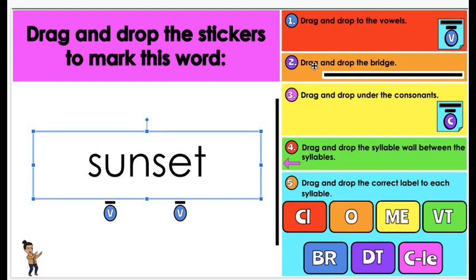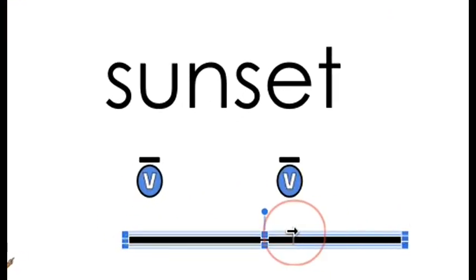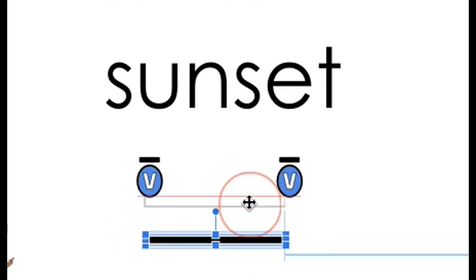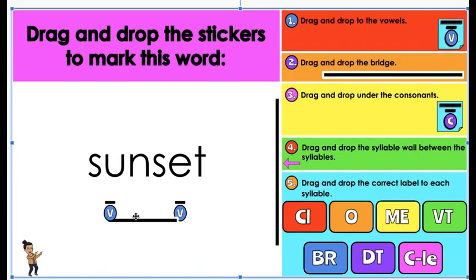The next thing I'm going to do is drag and drop a bridge. So in between my two vowels, I'm going to extend a line and I'm going to make a bridge. You're like me. You want everything to line up. So you probably will make your bridge smaller.